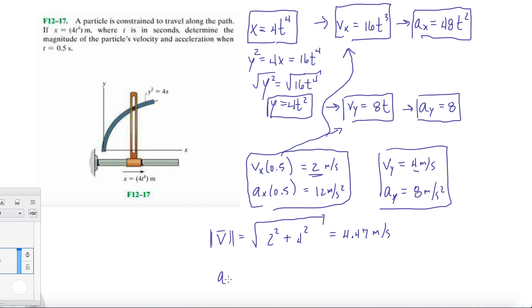And the same thing for acceleration. We do 12 squared plus 8 squared, and then we end up getting 14.4 meters per second squared. Yeah, that's basically it. We've found the magnitude of velocity and acceleration at time equals 0.5 seconds.